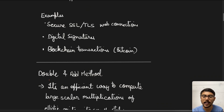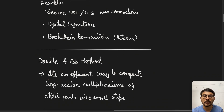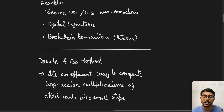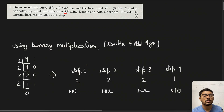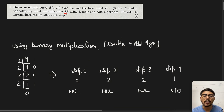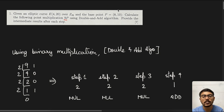The double and add algorithm is a simple yet efficient way to compute large scalar multiplications of elliptic points into smaller steps. We will see how it works and how it makes the calculation process efficient. First, we do the binary decomposition, which is the basis of the double and add algorithm. We are trying to find 9P but we are only given P.